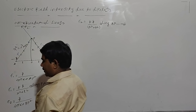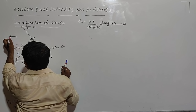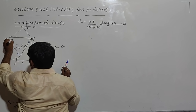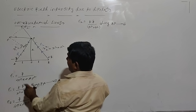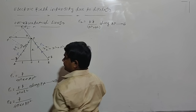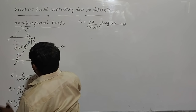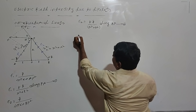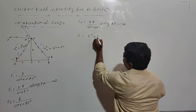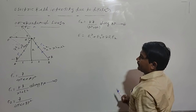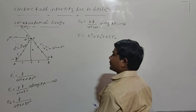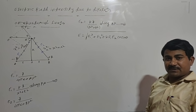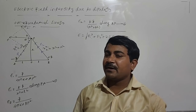E1 is acting in one direction and E2 is acting in another direction. The net electric intensity must be the resultant of these two. The angle made by E2 with the net E is theta, and the angle made by E1 with E is also theta. So the net electric intensity is: E equals under root of (E1 squared plus E2 squared plus 2·E1·E2·cos 2θ).